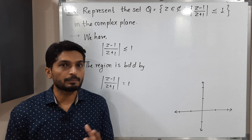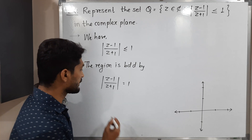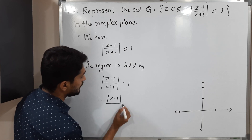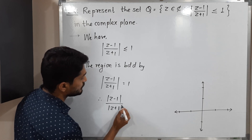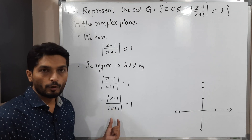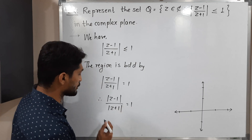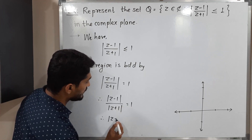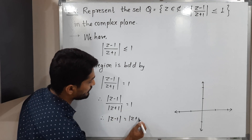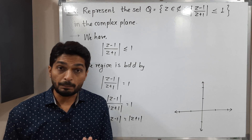We can take the mod of the numerator and mod of the denominator separately, so mod (Z minus 1) upon mod (Z plus 1) equals 1. Shifting the denominator across gives us: mod (Z minus 1) equals mod (Z plus 1).